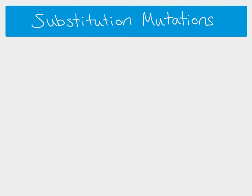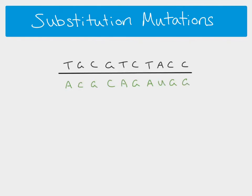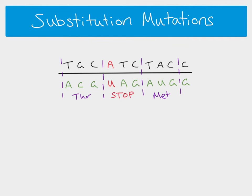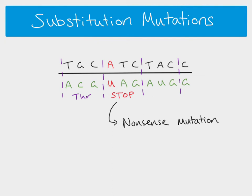Substitution mutations have slightly less of an impact usually. In a substitution mutation, only one nucleotide is swapped for another. For example, if G is substituted for an A, we get a different base in our RNA. In this case we get UAG, which is a stop codon, so nothing either side of where the substitution took place has had its codon changed — but because of the stop codon, anything downstream is not going to be translated. This is called a nonsense mutation, where the substitution causes a stop codon.